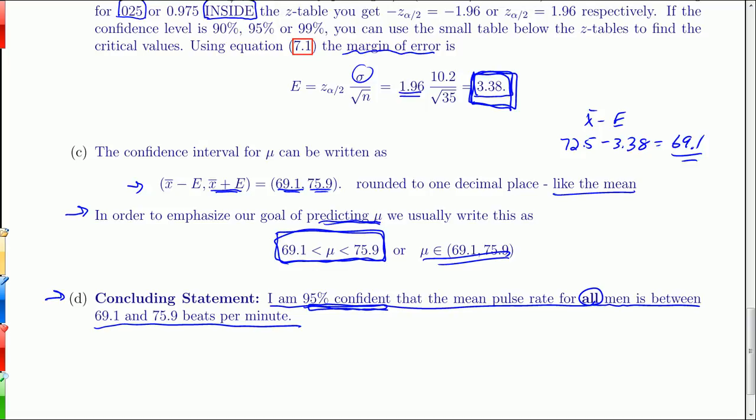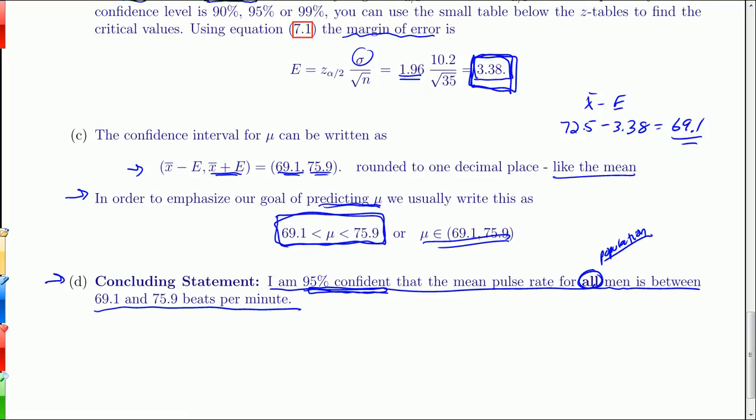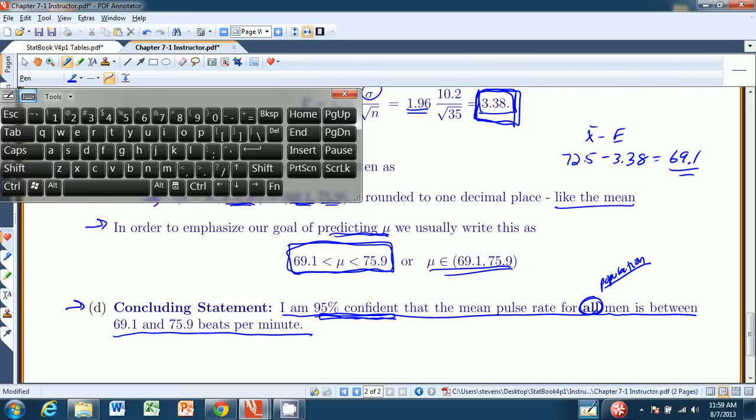So we can say I'm 95% confident the mean pulse rate for all men, and when I say all, I mean the population mean. So we've taken a sample statistic and estimated a population parameter. And this is our first encounter with inferential statistics. We take sample data and make an inference about the population value. So that wraps up the introduction. And we will actually do specific types of confidence intervals in the next section. So we're good to go. Bye now.